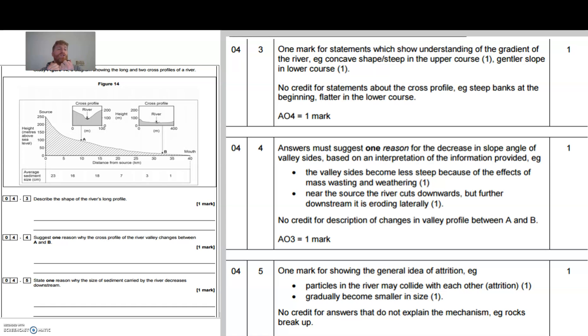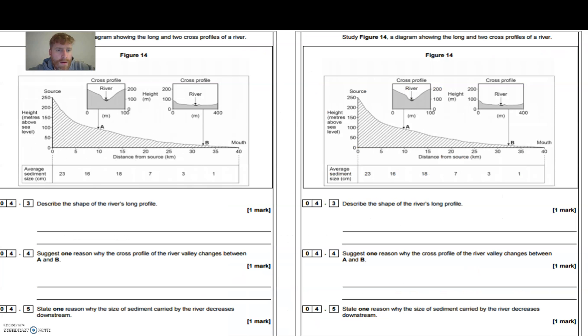For example, particles in the river may collide with each other, gradually becoming smaller in size. There's no credit for answers that do not explain the mechanism, e.g. rocks break up. So all you had to say was one reason why the sediment carried by the river decreases downstream. As the rocks are carried by the river, the process of attrition makes the rocks break up into smaller pieces, or the process of attrition wears rocks down, they become smaller and rounder. Anything suggesting because they've been in the river for a longer period of time, attrition has happened and attrition causes them to break up into smaller pieces.